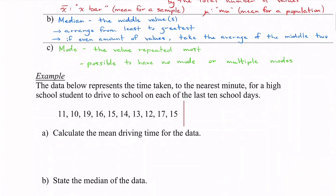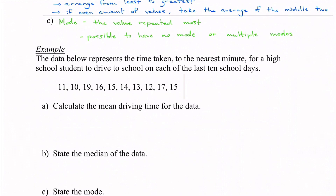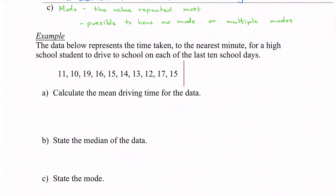Looking at our first example: the data represents the time taken, to the nearest minute, for a high school student to drive to school on each of the last 10 school days, and we're going to calculate mean, median, and mode. First we calculate the mean driving time. In this case it's not an entire population — we didn't take all of the days he's driven to school, just the last 10 — so what we are finding is x-bar, which is for a sample.